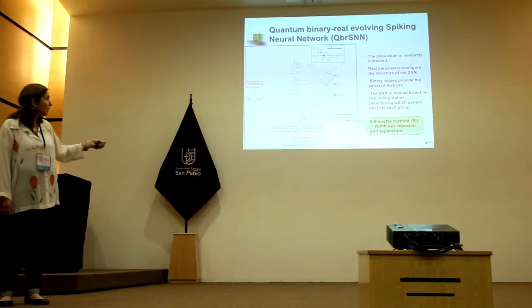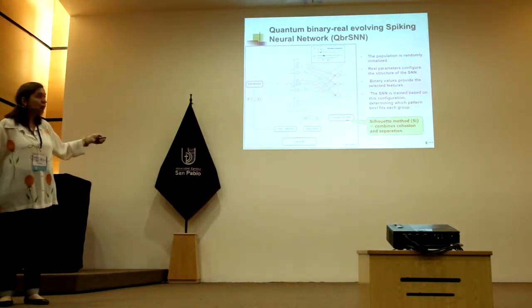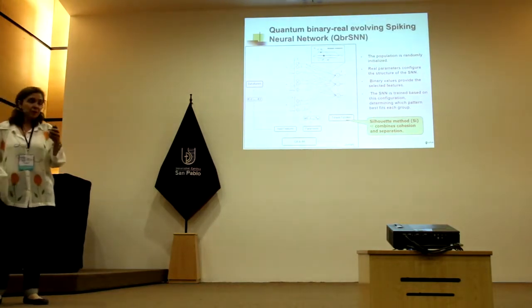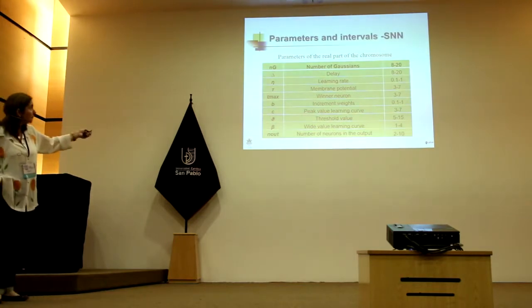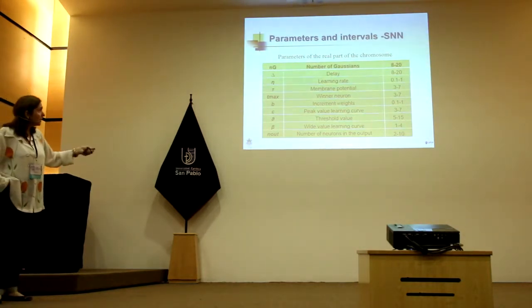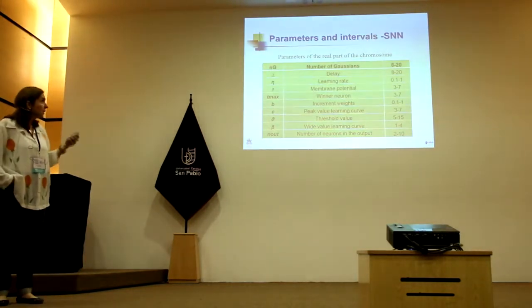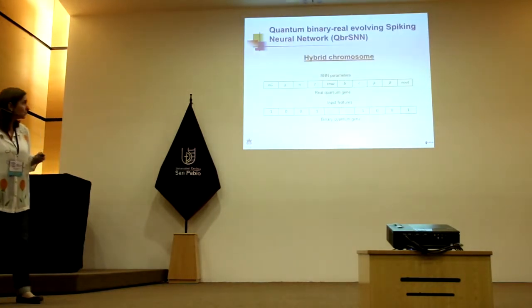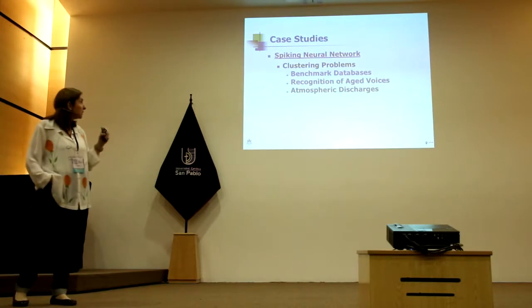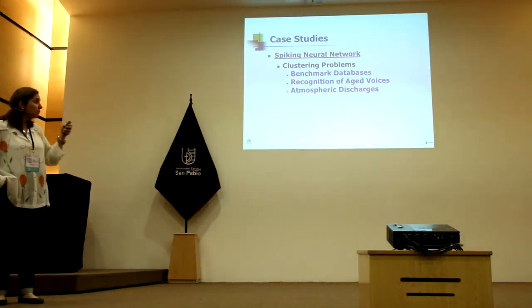The structure uses the binary part for feature selection and some parameters to configure the spiking neural network. The fitness function is based on the silhouette, an unsupervised evaluation metric. Here are some of the parameters — including the number of clusters and many others relating to how the neurons work — all provided automatically by the quantum-evolved spiking network. The binary part and the real part together define all configuration. Three basic applications are shown to compare with other clustering algorithms.